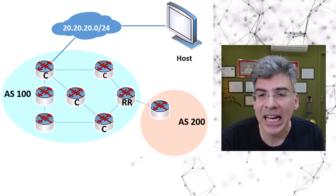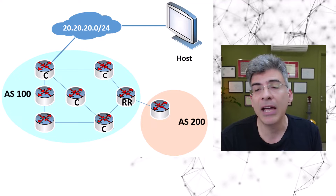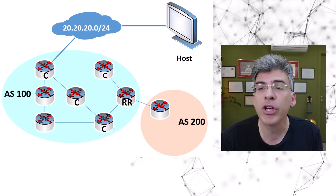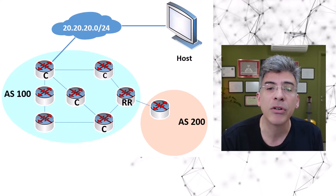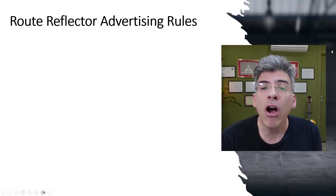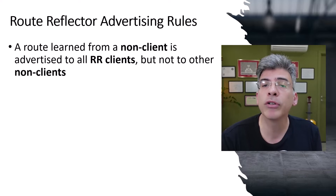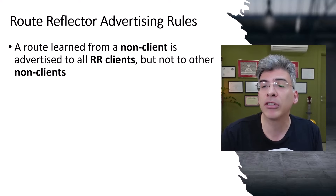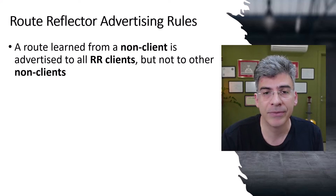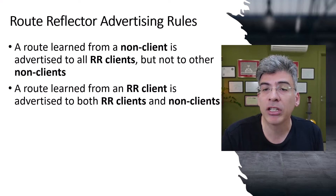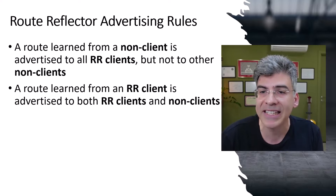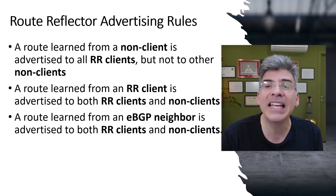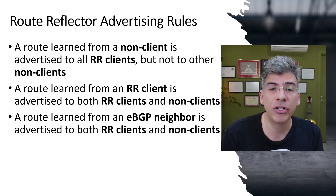Now we have to understand how routes are exchanged and forwarded between all of these routers. An RR follows a set of rules. First, a route learned from a non-client is advertised or reflected to all route reflector clients, but not to other non-clients. A route learned from a route reflector client is advertised to both route reflector clients and non-clients. And finally, a route learned from an EBGP neighbor is advertised to both route reflector clients and non-clients.